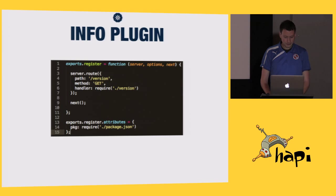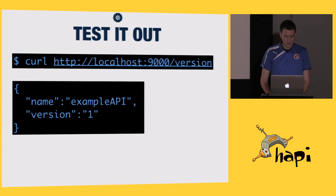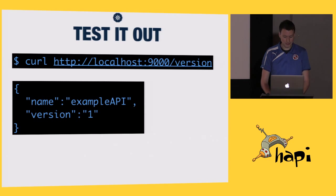That plugin looks like this — very simple. It captures the root of slash version, and has a handler there which we'll look at next, and it just replies back with the name of the API, the example API, and a version number which is 1 in this instance. Once that's running, this curl request will return back this JSON response, which is very exciting. I know you're all dying for me to push this live, but unfortunately it is just an example.